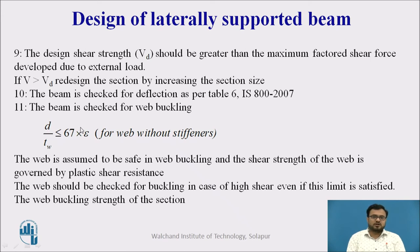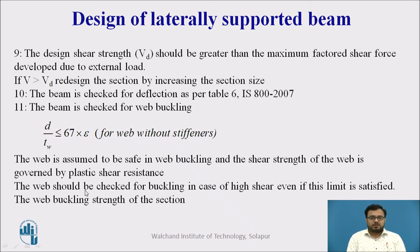Next, we check for web buckling. For the low shear case, if D/TW ≤ 67ε, the web is assumed safe in web buckling and shear strength is governed by plastic shear resistance. For the high shear case, even if this limit is satisfied, we must still take a check for web buckling.